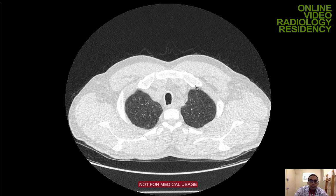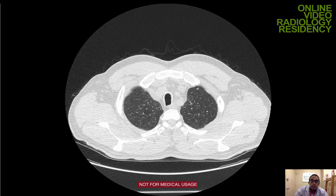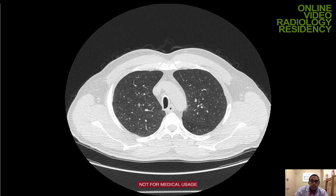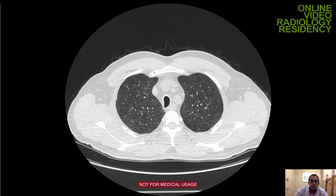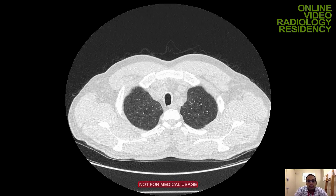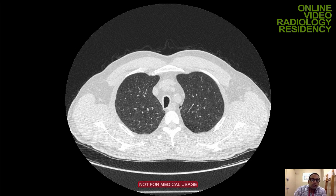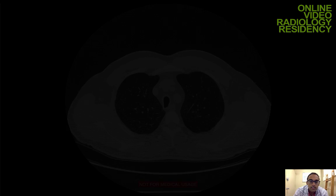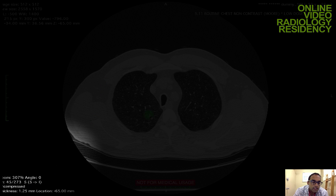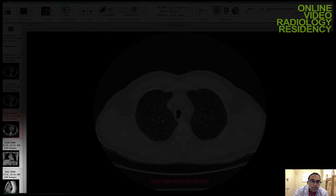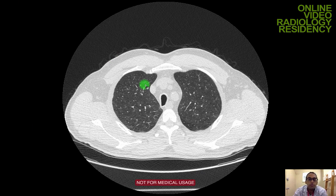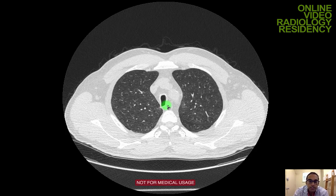Welcome to the section on non-contrast chest CT. I'm going to show you a basic search pattern for looking at a non-contrast chest CT. First, you want to start with technique. This is a non-contrast study done in the axial plane at thin sections — slice thickness here is 1.25 millimeters. This set of images is the best for evaluating the lung parenchyma, which is the main goal of a non-contrast chest CT.